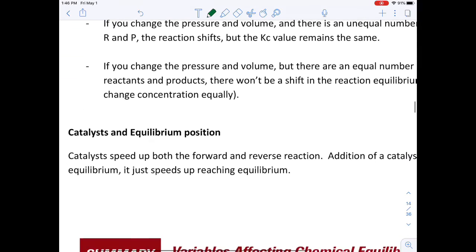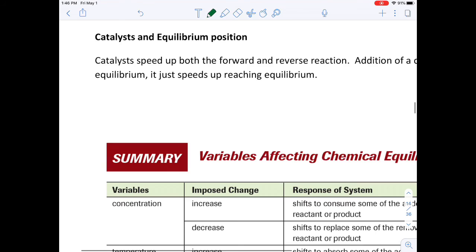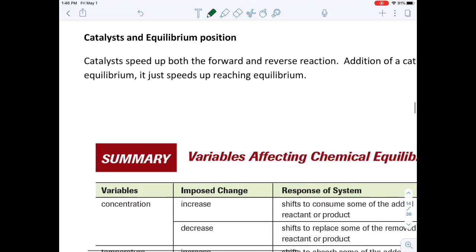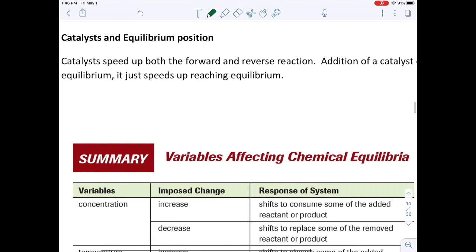Now, for catalysts in equilibrium position, if you had added a catalyst, it changes nothing when the system is at equilibrium. It just speeds up getting to equilibrium. So sometimes you'll see on a graph where you've got your three or your different chemicals and they go, oh, da, da, da, da, da, and then nothing changes. Well, if nothing changes, it's probably because they've added a catalyst. So it's kind of a stress or a change to the system, but it doesn't actually change the equilibrium position.